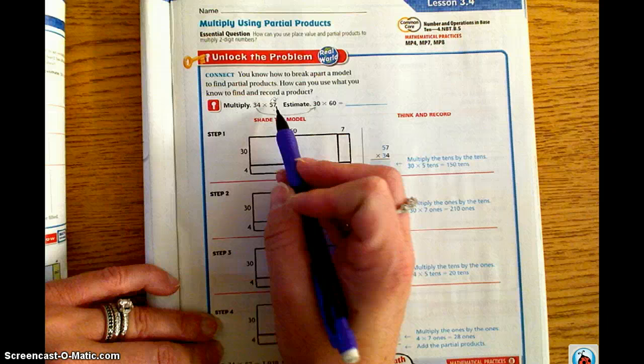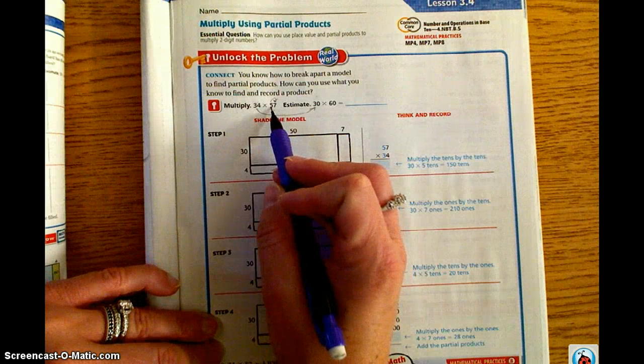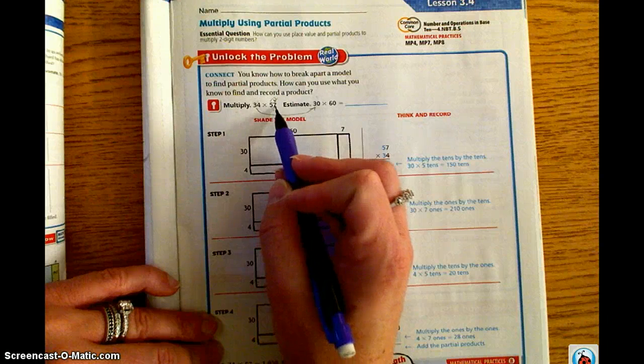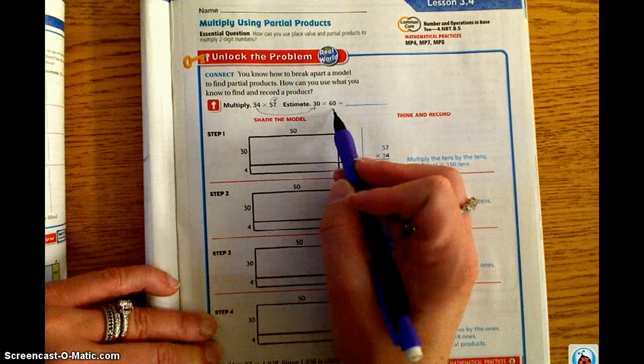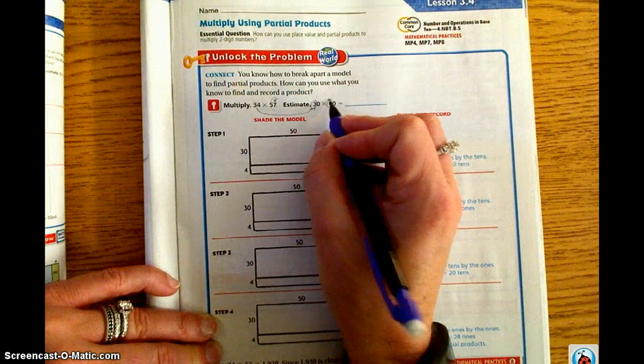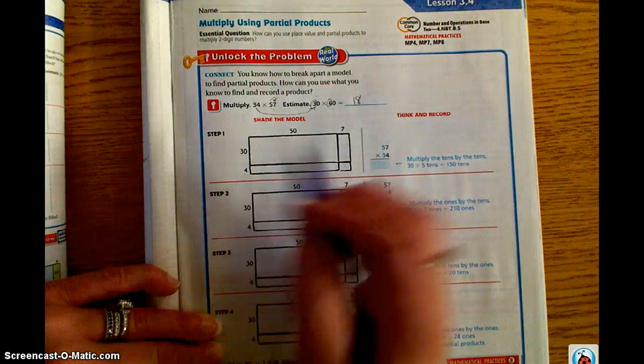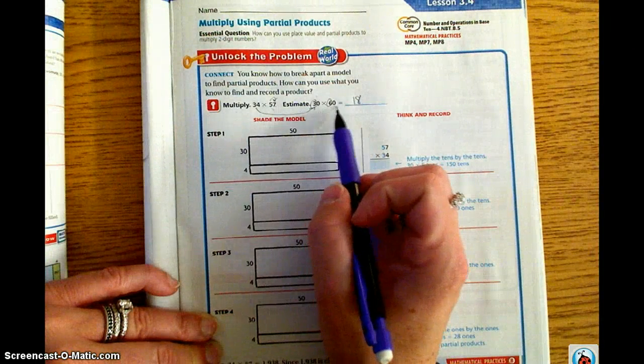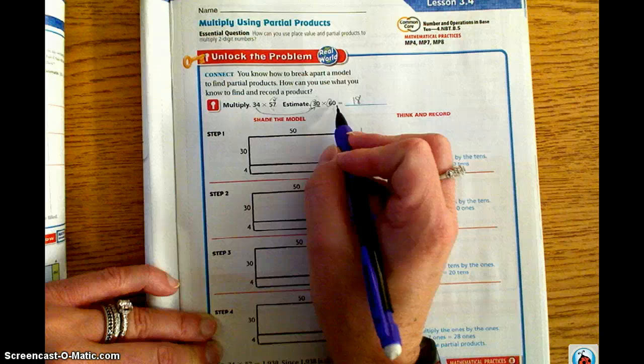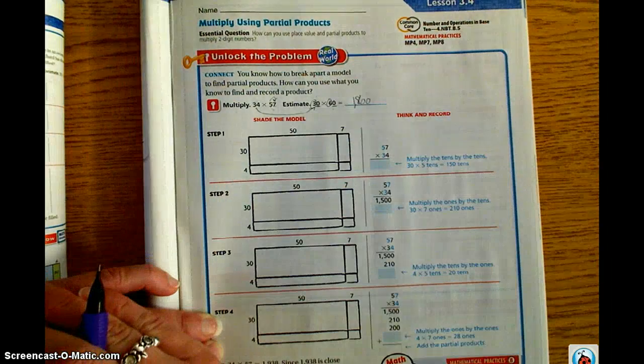Same being said with the 57. Five, we look next door, five or more, we're going to go up. Less than five, we're going to stay the same. This is greater—seven is greater than five, so this number becomes 60. Then, using our mental math, we can take 3 times 6. We know that's 18. And then we have two zeros represented in the original problem. So we add our two zeros, it becomes 1,800. That's our estimate.